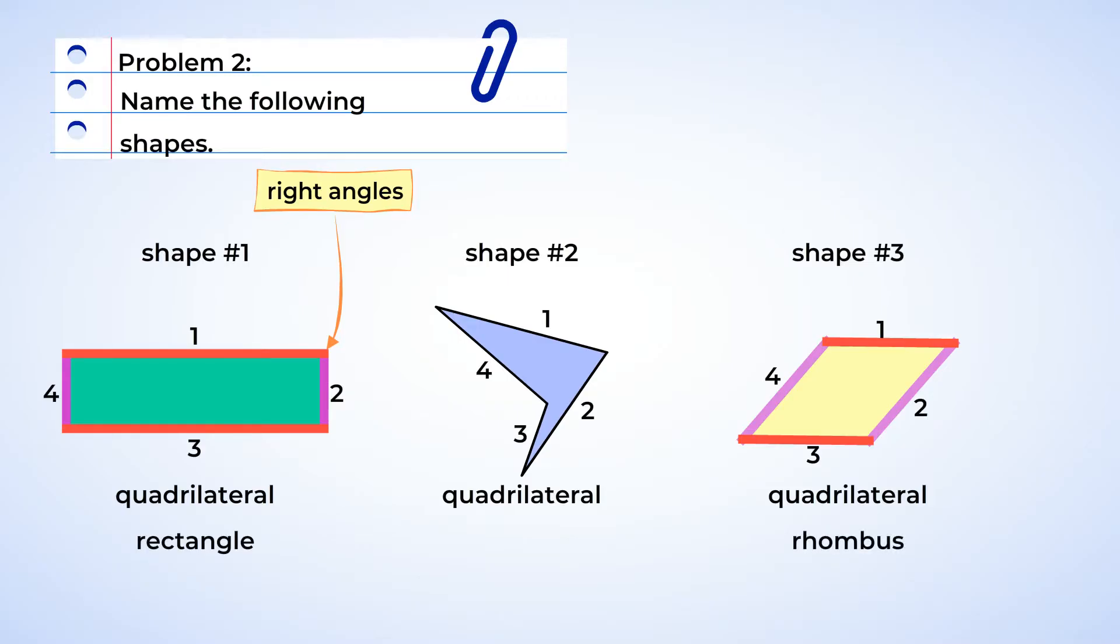And since there are no other attributes to shape two, we just label it as a quadrilateral. Great job identifying those shapes!